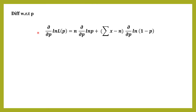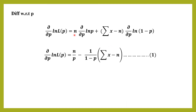Now we differentiate the log-likelihood with respect to p. The derivative of n·ln(p) is n/p, since n is constant. For the second term, (Σx − n) is independent of p, so it stays as is; the derivative of ln(1−p) is −1/(1−p). This gives the first derivative: n/p − (Σx − n)/(1−p) — call this equation (1).